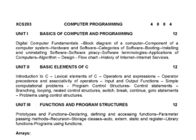In the first unit, we cover the different components of a computer — hardware, software, booting, installing and uninstalling software — and the basics of computer programming such as algorithm, flowchart, design, and internet and internet services.